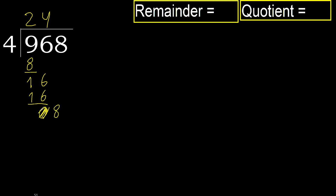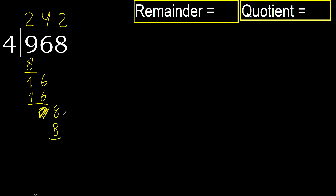Next: bring down 0, ok. 8. 4 multiplied by 2 is 8, which is not greater. Subtract. Next, there is not a number, therefore finish it.